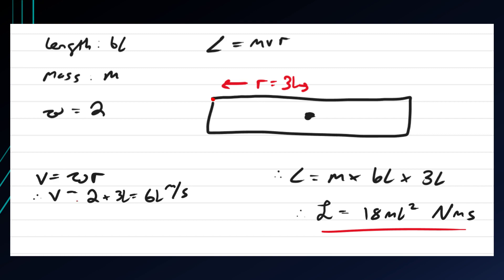So the velocity is omega times r, so it's 6l meters per second. And so the angular momentum is m times 6l times 3l, so that gives the magnitude of the angular momentum 18ml squared Newton meter seconds.